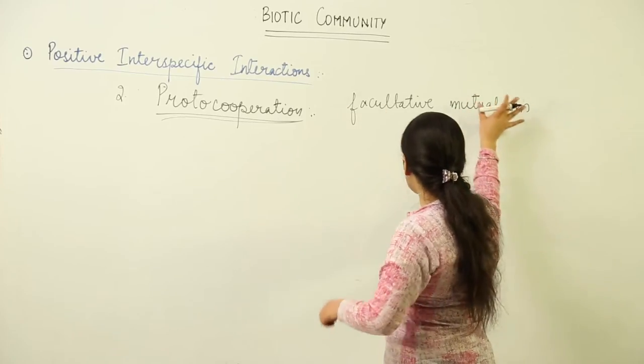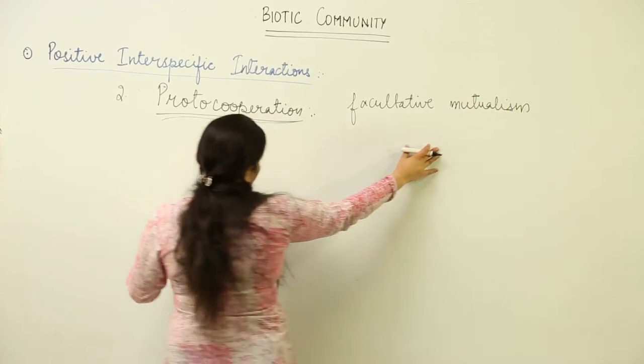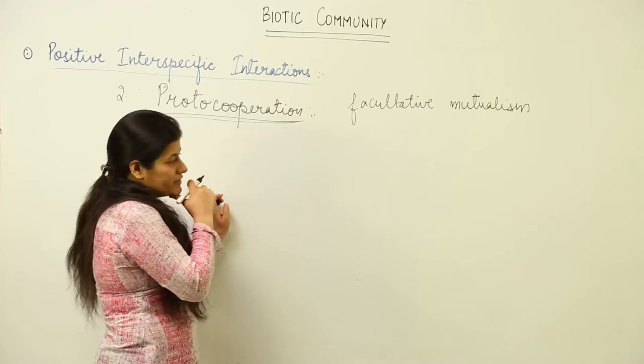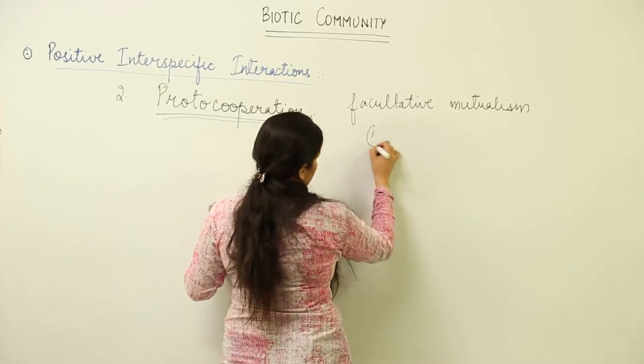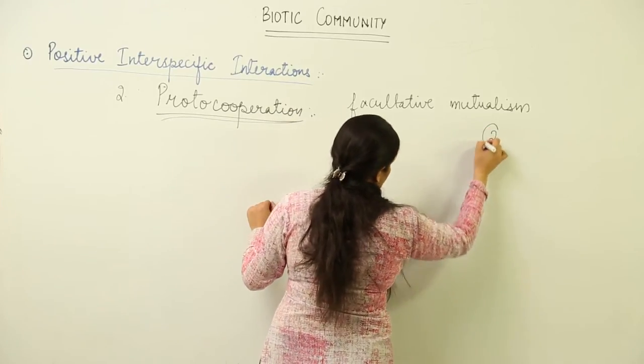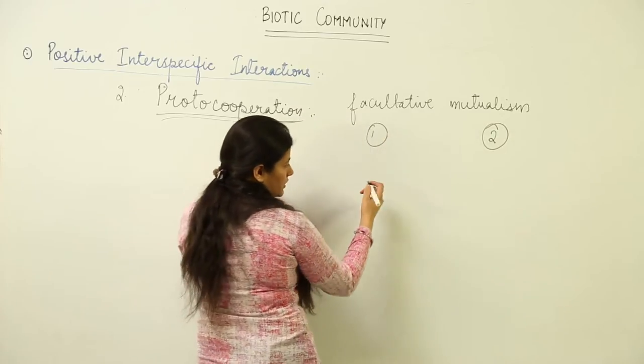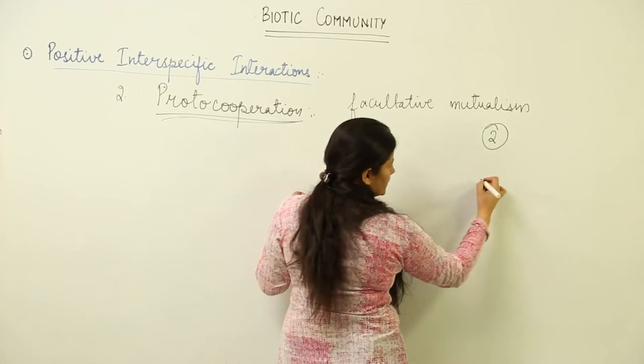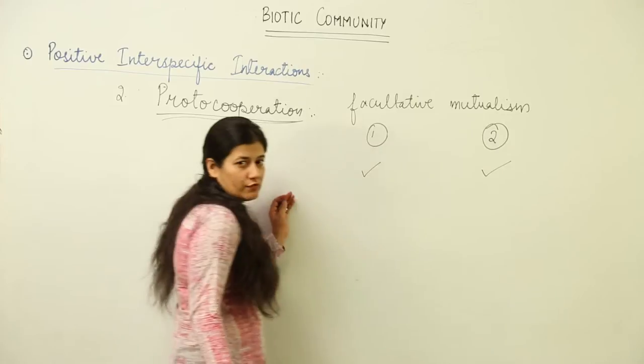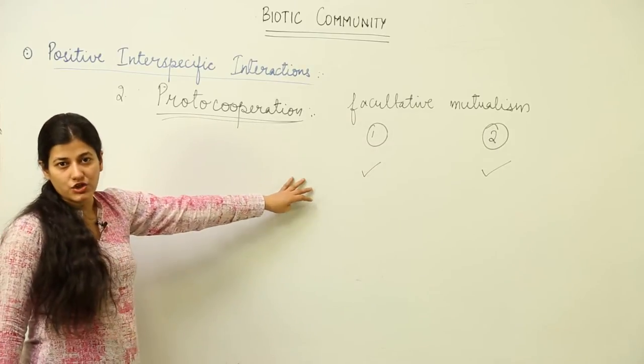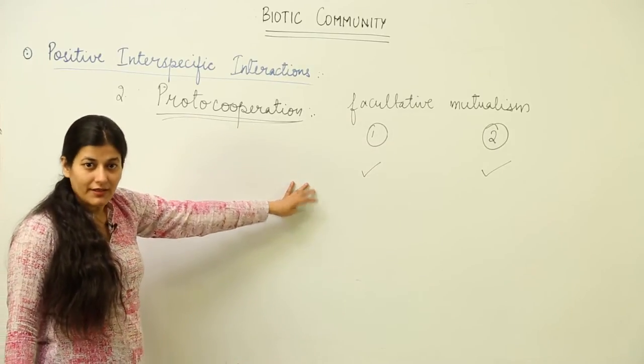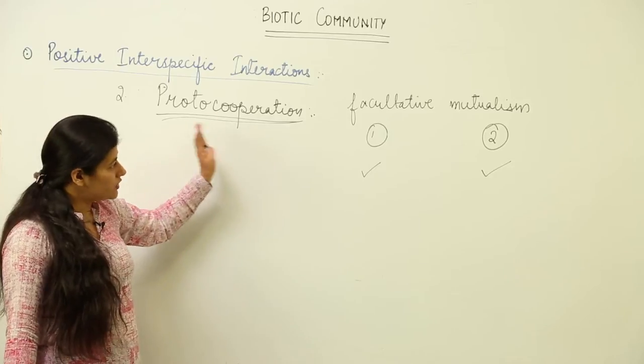It is a type of mutualism. In proto-cooperation, suppose this is one organism and this is the other organism. As a result of interaction between the two, one is benefited and the other is also benefited. Such an interaction is not mandatory, meaning the organisms interacting under proto-cooperation can survive without each other.